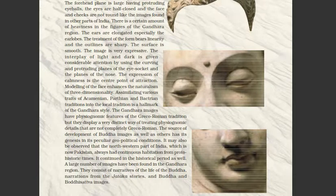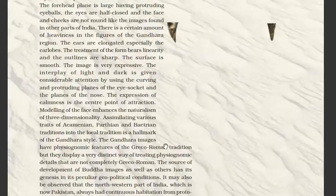The Gandhara images have physiognomic features of the Greco-Roman traditions, but display a distinct way of treating physiognomic details that are not completely Greco-Roman. The source of development of Buddha images has its genesis in the peculiar geopolitical conditions of this region. The northwestern part of India, now in Pakistan, always had continuous habitation from proto-historic times. A large number of images found in the Gandhara region consist of narratives of the life of the Buddha, narrations from the Jataka stories, and Buddha-Bodhisattva images.